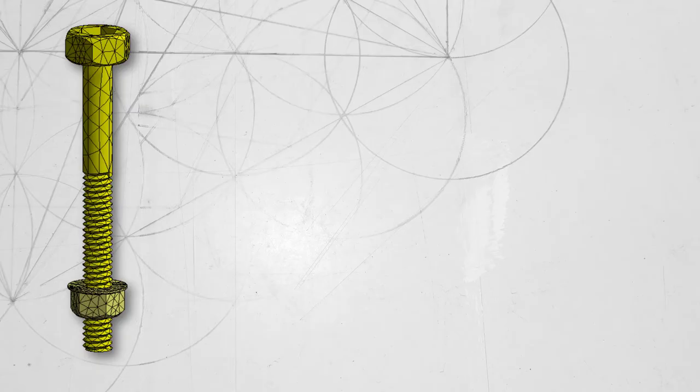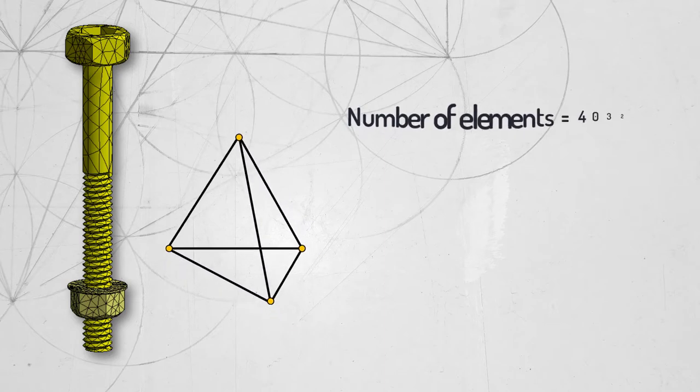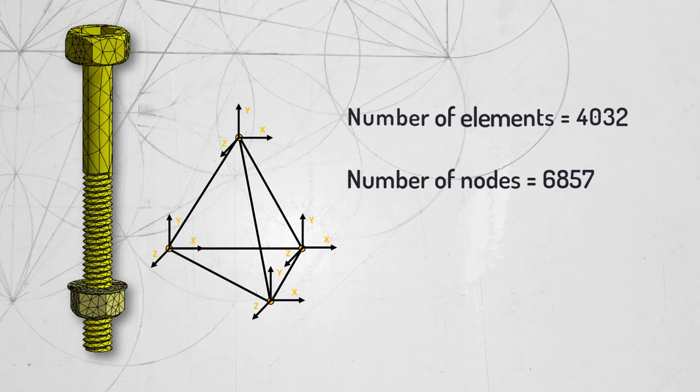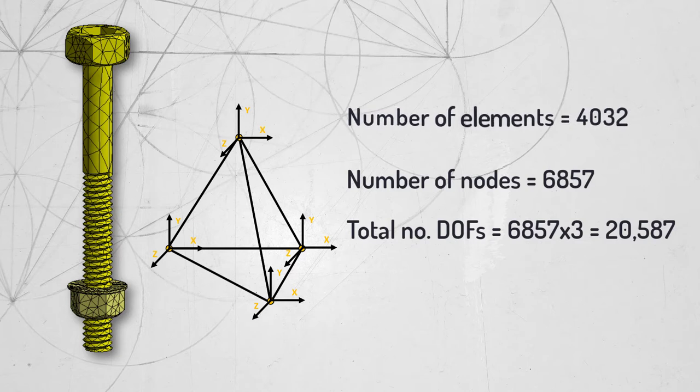This is because each bolt is made of multiple solid elements, each element is made of multiple nodes, and each node has 3 degrees of freedom. This increases the number of calculations that are to be performed to find the solution. When the threads are included, a very fine mesh is needed to capture such detail and this increases the computational time exponentially.